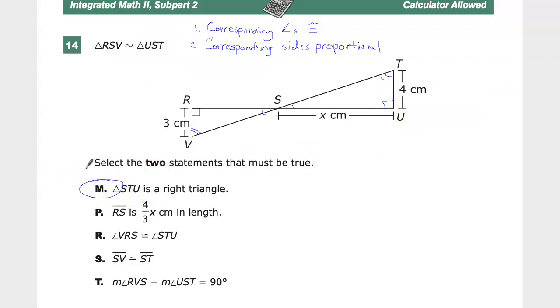Now, RS is 4 thirds X centimeters in length. So where are we going to get that information? Well, we have to look and see what we have. First off, the 4 thirds thing, that comes from the proportional relationship.